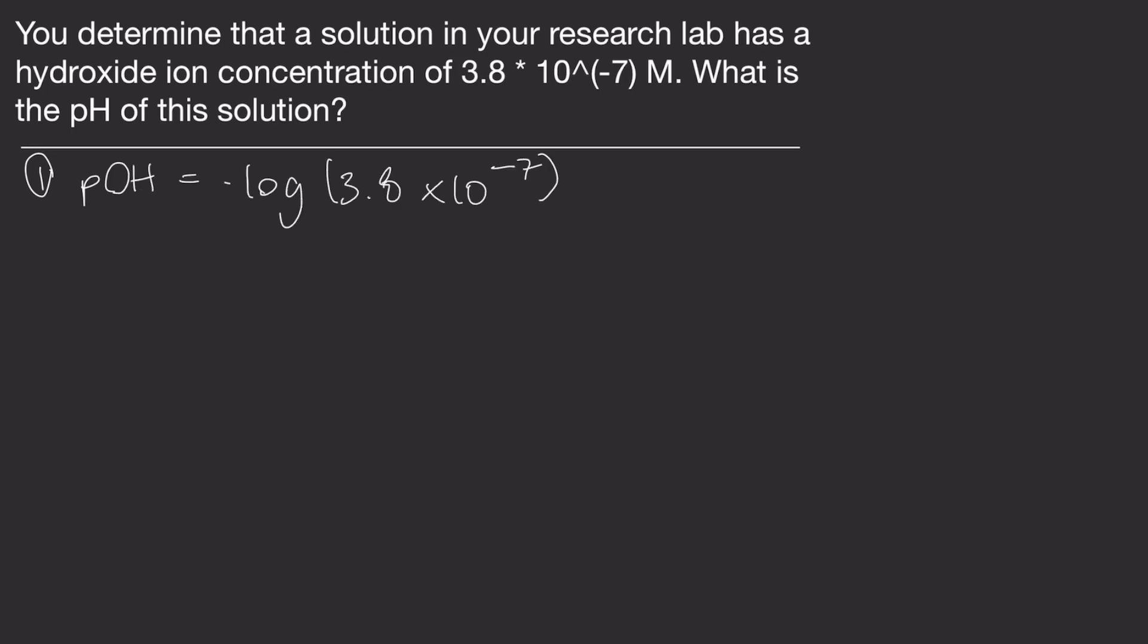Plug in the OH ion concentration into the equation and plug it in. Once you do this in your calculator, you should get 6.42.